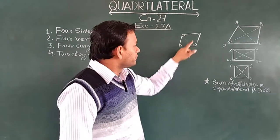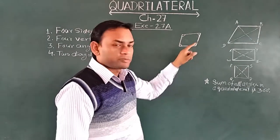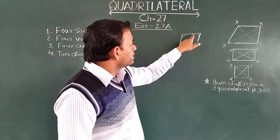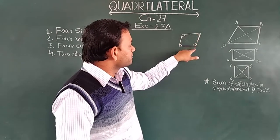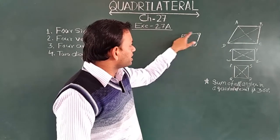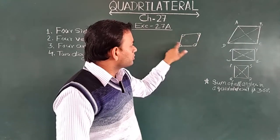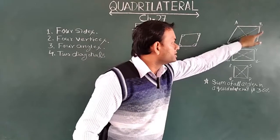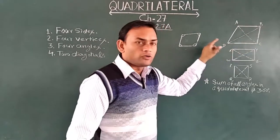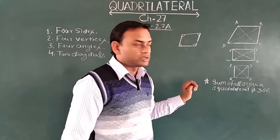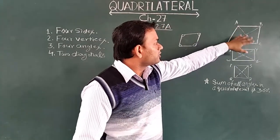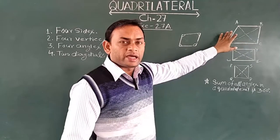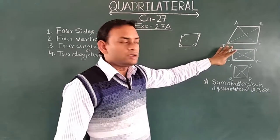In every quadrilateral, four vertices are there. A vertex is where two line segments meet together. You can see here A, B, C, D — four vertices are there, and I have given the name of the vertices in this figure.